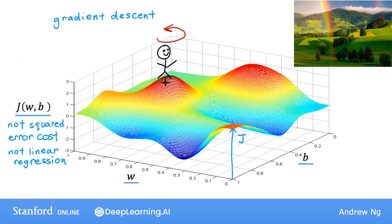So what the gradient descent algorithm does is you're going to spin around 360 degrees and look around and ask yourself, if I were to take a tiny little baby step in one direction and I want to go downhill as quickly as possible toward one of these valleys, what direction do I choose to take that baby step?